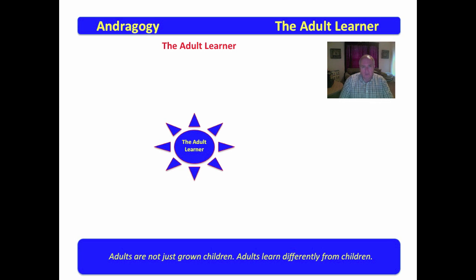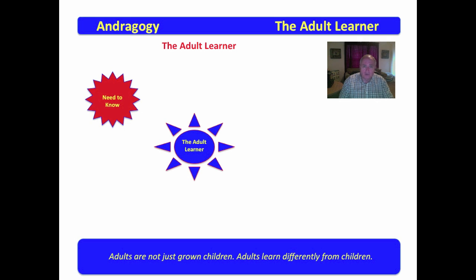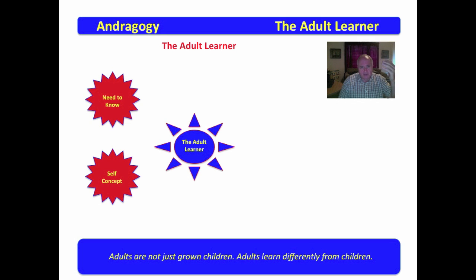The adult learner is very different than the child learner. The adult learner has a need to know why learning is important. The adult learner isn't going to learn something that the adult doesn't deem relevant to their own personal situation. The adult learner has a very well-developed and strong self-concept already in place. Adults don't like being talked down to. Adults want to be considered peers. Children will generally accept the teacher talking down to them, but as you become an adult, you really don't like being talked down to. You need to know why the learning is important and you need to be treated more as a peer.